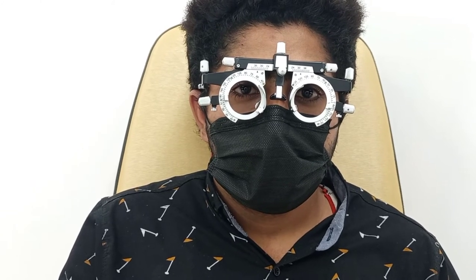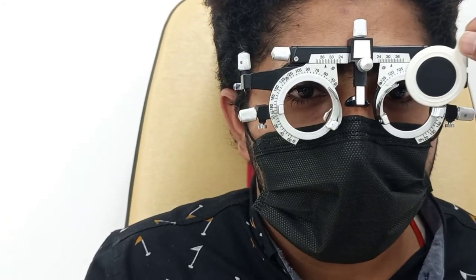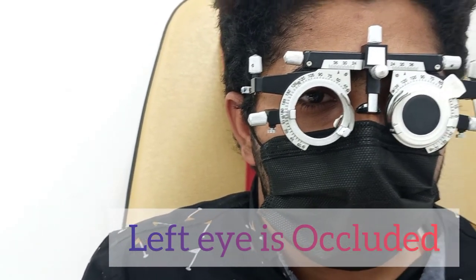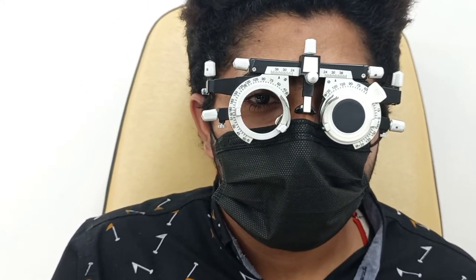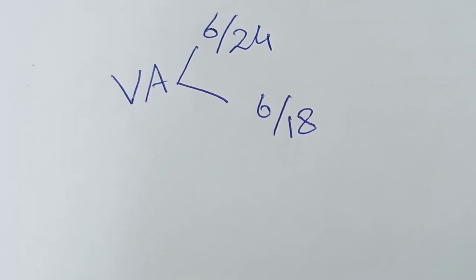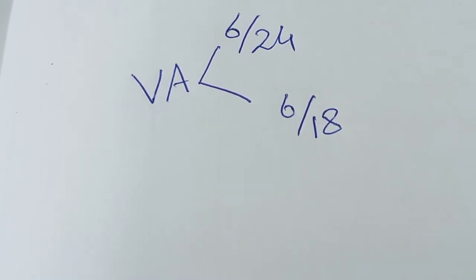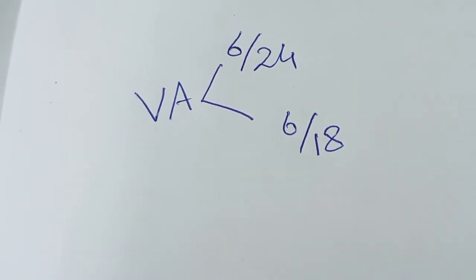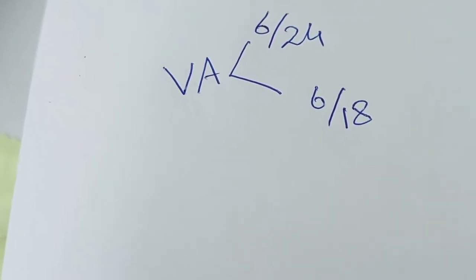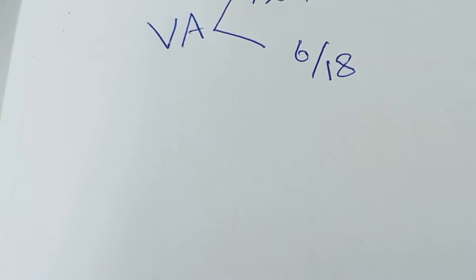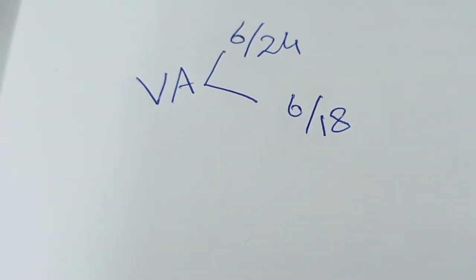We will place the trial frame on the patient's face and occlude one eye. The left eye is occluded and we will establish the best vision sphere of the right eye. The recorded visual acuity of the right eye is 6/24 and the visual acuity of the left eye is 6/18. We will now establish the best vision sphere in the right eye.